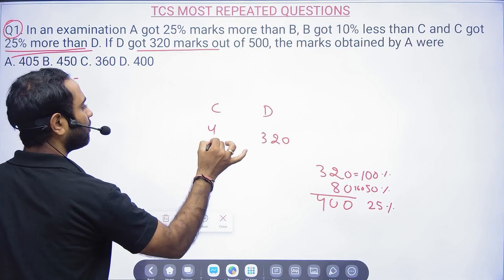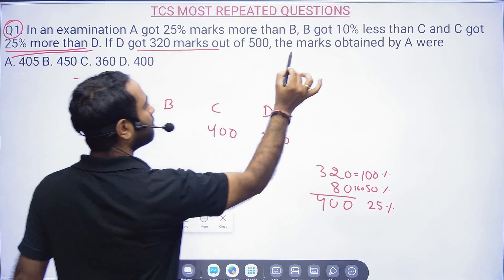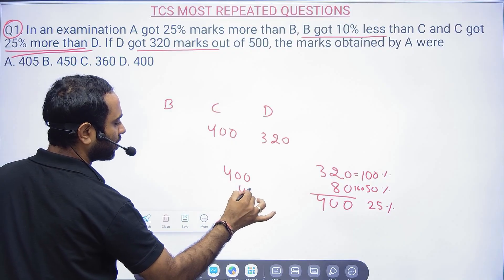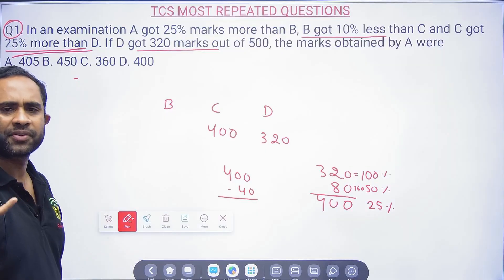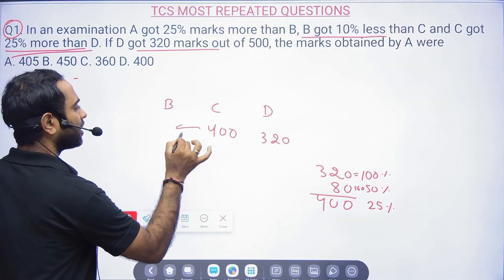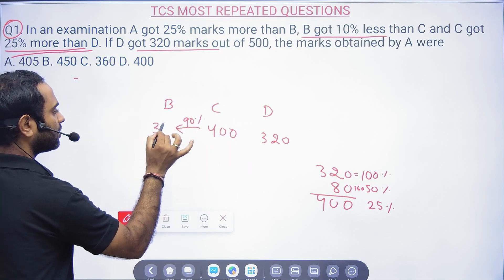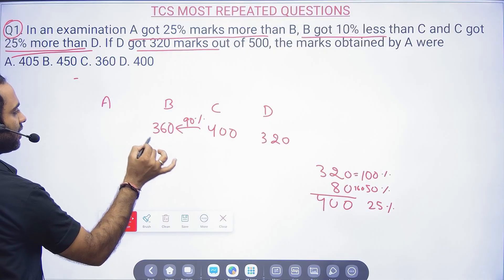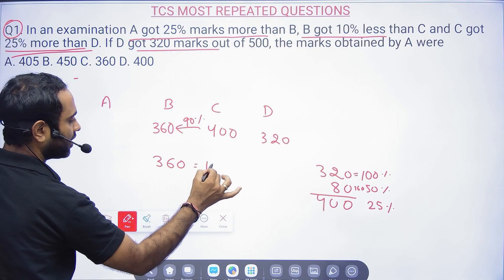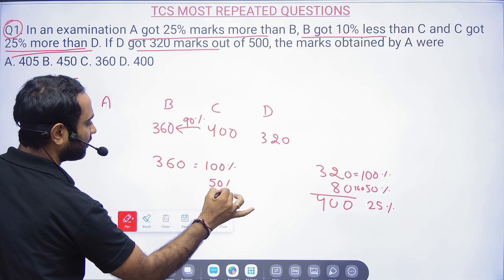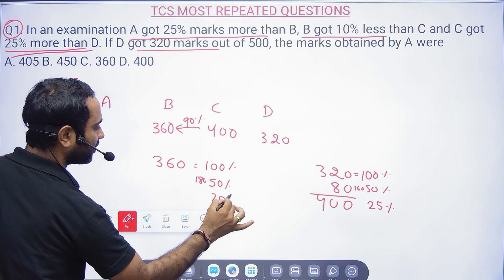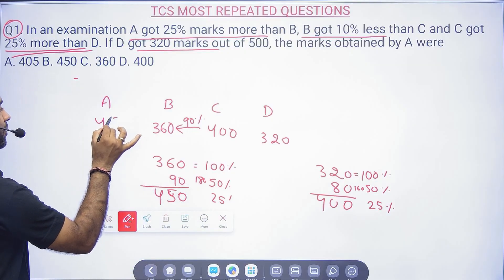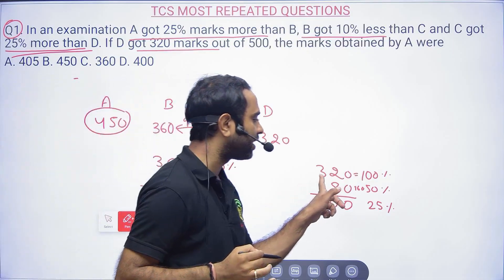C gets 400. B got 10% less than C, and 10% of 400 is 40. So B gets 90% of 400, which is 360. A gets 25% more than B. 360 is 100%, 50% is 180, and 25% is 90. So A = 360 + 90 = 450. Now, how are we treating the base as 100%?